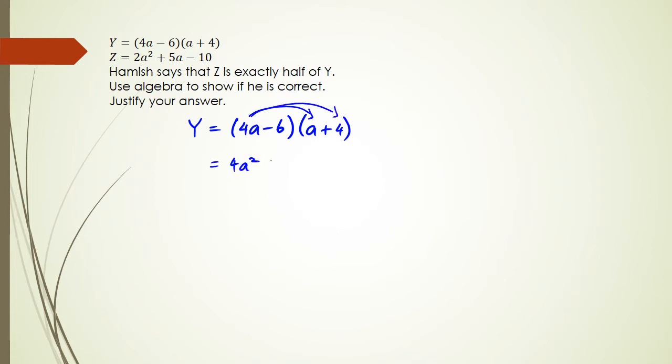4a times 4, 16a, negative 6 times a is negative 6a, and then negative 6 times 4, which is negative 24. So y simplifies to 4a squared plus 10a minus 24. So that's the first part.